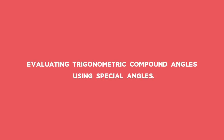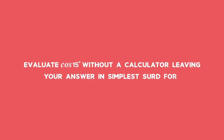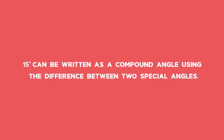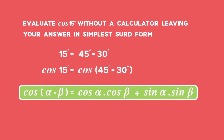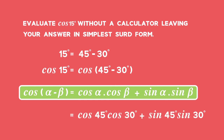Example 1 — Evaluating trigonometric compound angles using special angles. Evaluate cos of 15 degrees without using a calculator. 15 degrees can be written as a compound angle using the difference between two special angles. Cos of 15 degrees is the same as cos of (45 degrees minus 30 degrees). Using the compound angle expansion for cos of the difference of two angles, we get cos 45 degrees times cos 30 degrees plus sin 45 degrees times sin 30 degrees.